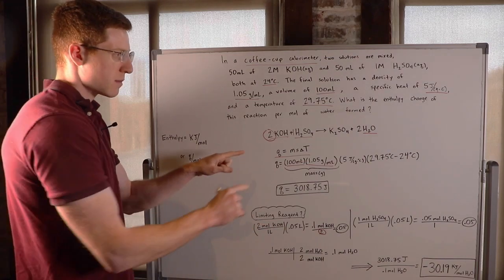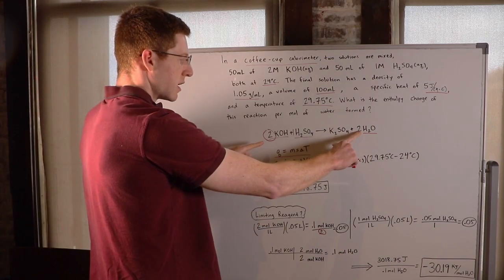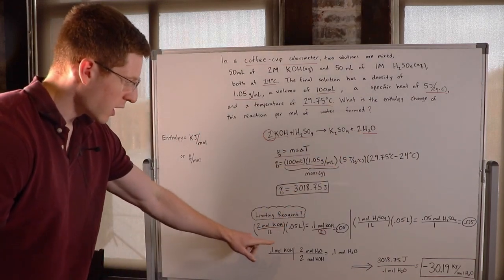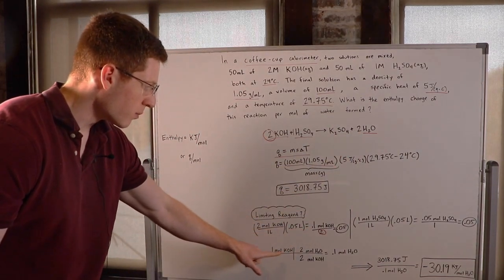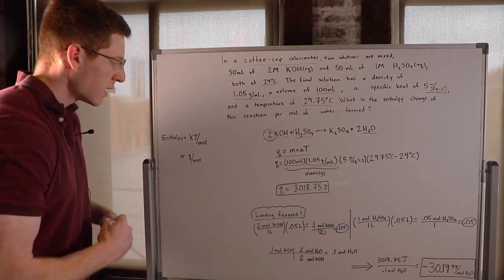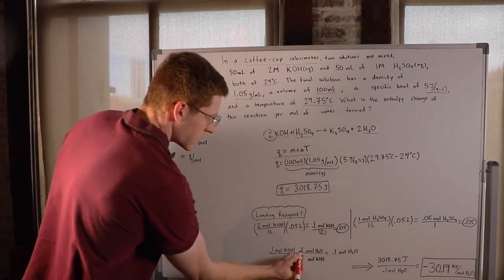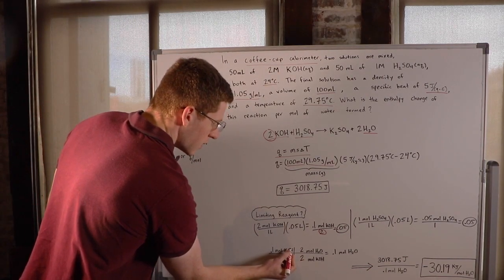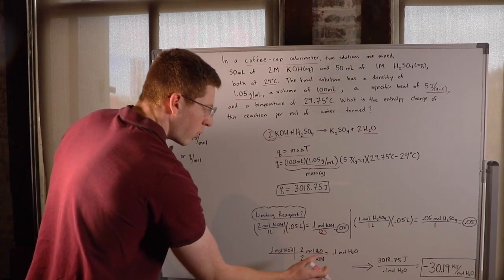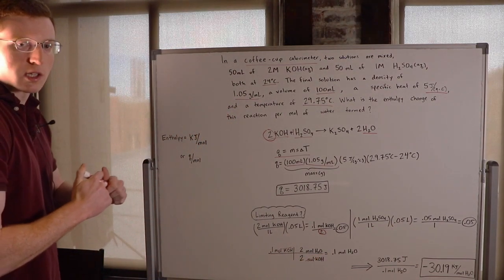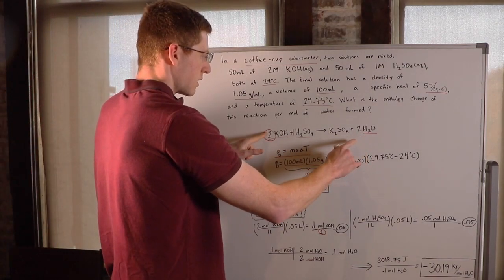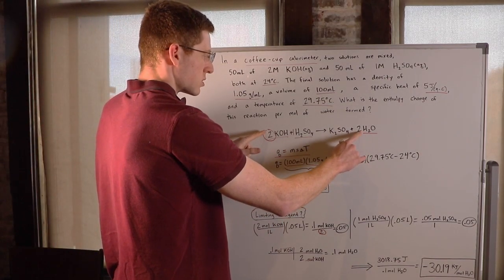I picked KOH because it makes the math easy. Both have a stoichiometric coefficient of 2. So we have 0.1 moles of KOH. To convert that to moles of water, I know they react in a 2-to-2 molar ratio, so the moles of KOH cancel out and I'm left with 0.1 moles of water. You could have done that in your head — if we have 0.1 moles of KOH, we have 0.1 moles of water, because they have the same stoichiometric coefficient.